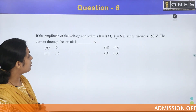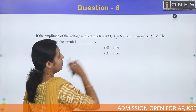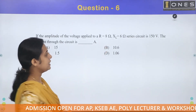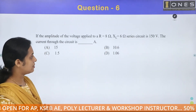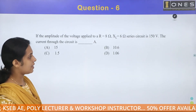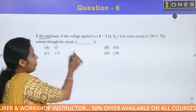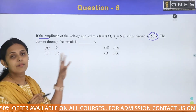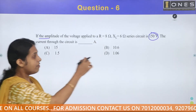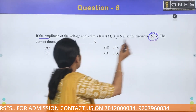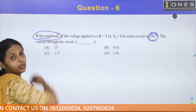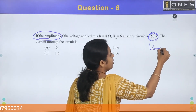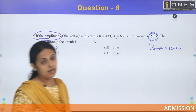Next question. If the amplitude of the voltage applied to an RL circuit, R is equal to 8 ohm and XL is equal to 6 ohm — that is the inductive reactance — and it is a series circuit with voltage amplitude of 150 volt. Please note that V max is 150 volt. It is not the RMS value; it is the maximum value.